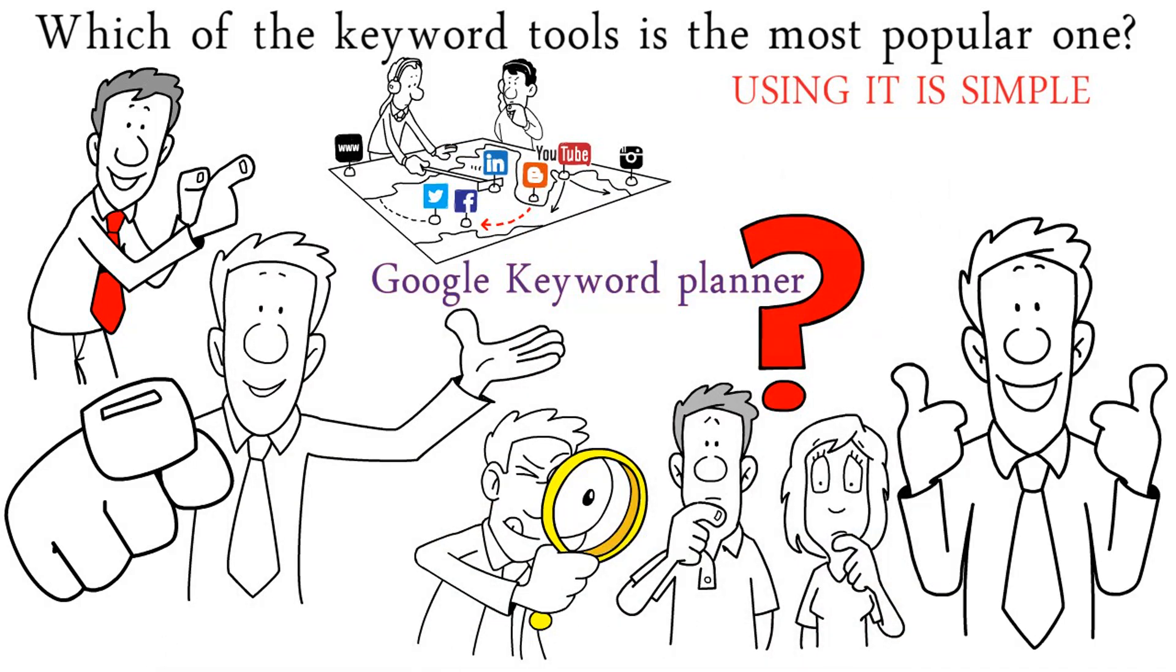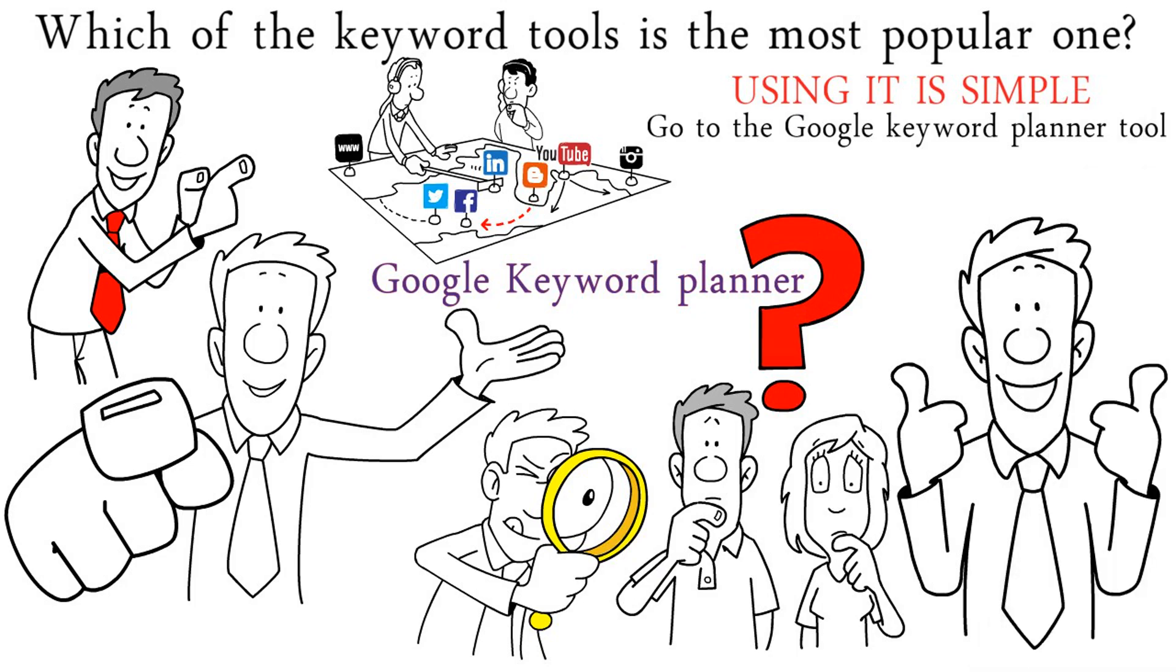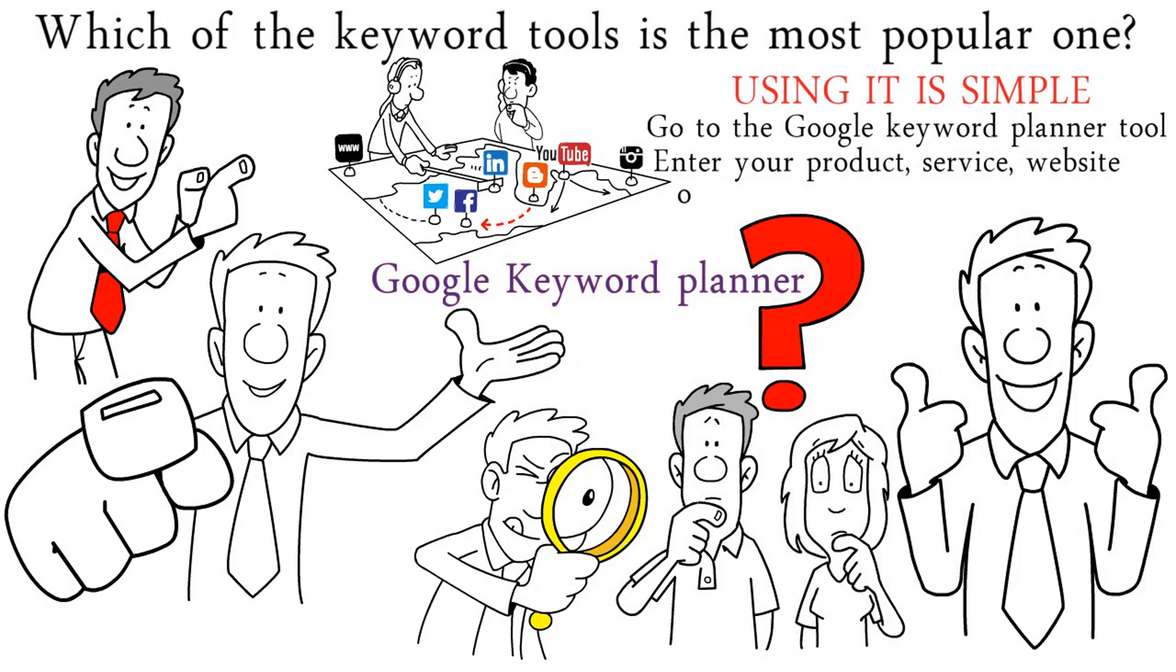Using it is simple. All you need to do is go to the Google Keyword Planner tool and enter your product, service, website, or product category.